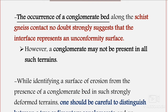In the presence of conglomerate at an unconformity, a bed of conglomerate is commonly found at the base of the upper series of rocks. Such conglomerates contain fragments of the underlying rocks. However, a conglomerate may not be present in all such terrains — the presence of conglomerate is not essential in all types of rocks.